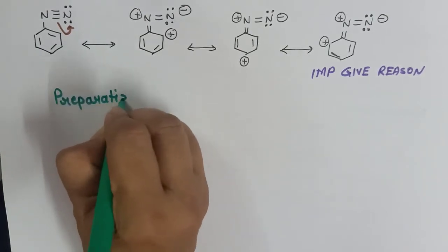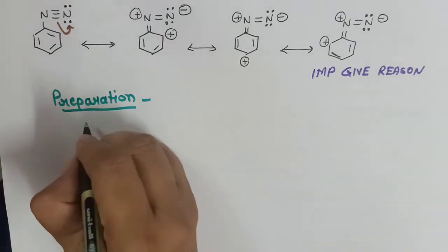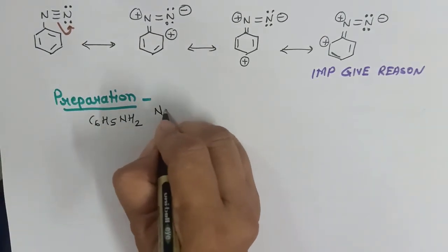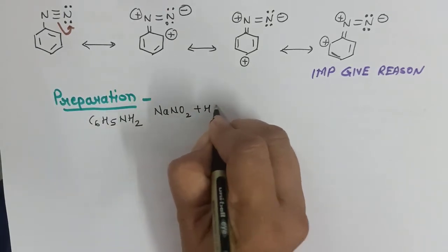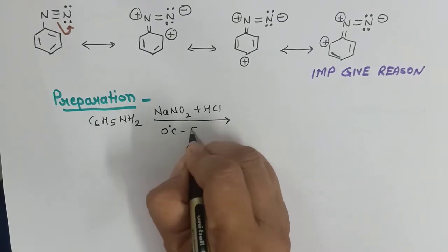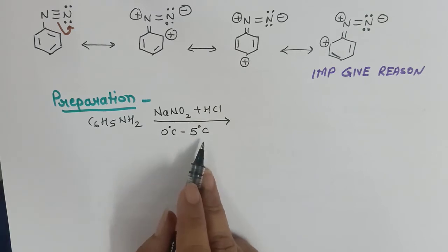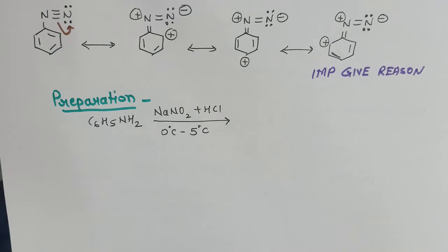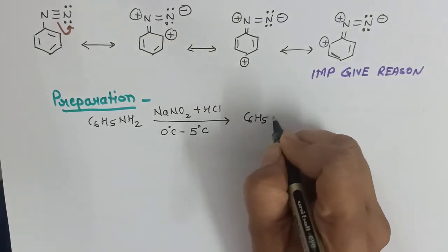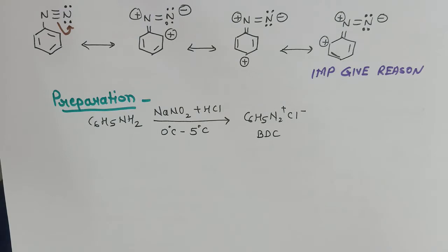Now let us study the preparation method — we have already studied this. Aniline when treated with nitrous acid — nitrous acid is made from a mixture of NaNO2 and HCl — but the most important condition is maintaining the temperature between 0°C and 5°C. If this temperature is not maintained, the diazonium salt will immediately decompose. The product is C6H5N2+Cl−, that is benzene diazonium chloride (BDC).